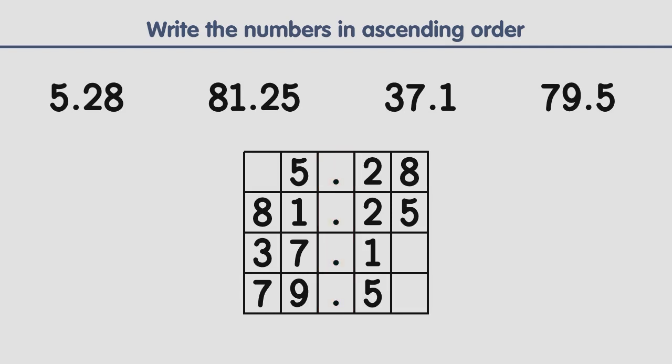The second step is to fill in the empty spaces with zeros. The third step is to find the smallest number. The smallest number is the number with the smallest digit in the first column. In the first column we have 0, 8, 3, and 7. The smallest digit is 0, so this is the smallest number.